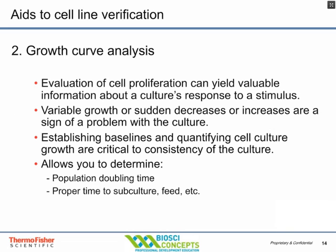Growth curve analysis is another really critical thing to do — most people don't do growth curves, but it's really important. A growth curve should be consistent and done for cells grown under whatever conditions you use in the lab. By looking at the slope of the line, you can determine the cell doubling time. A premature stationary phase might indicate cells need to be subcultured. Go back periodically and re-examine the growth curve to make sure the slope is the same, confirming your cells aren't changing.